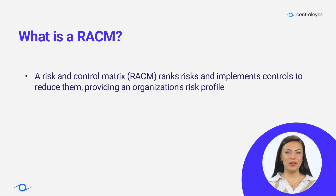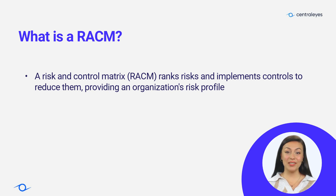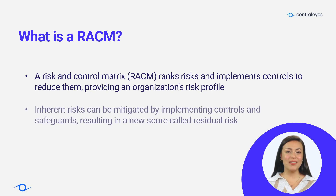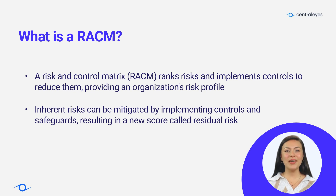A risk and control matrix, or RECM, is a valuable tool for ranking risks and implementing controls to mitigate them. It visually represents potential risks and the protective measures taken to reduce them, providing an overview of an organization's risk profile. Inherent risks exist inherently in assets, but controls and safeguards can be implemented to lower them, resulting in a new score known as residual risk.